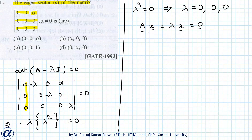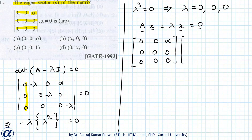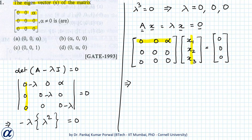Assuming the eigenvector is [x₁, x₂, x₃], the matrix equation becomes: the matrix with entries 0, 0, alpha in the first row, zeros elsewhere, multiplied by [x₁, x₂, x₃] equals [0, 0, 0]. This gives us alpha times x₃ equals zero, and all other rows just give zero equals zero.